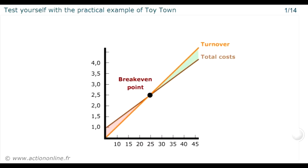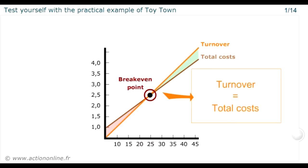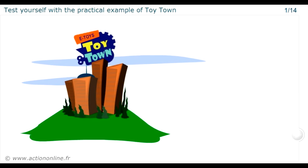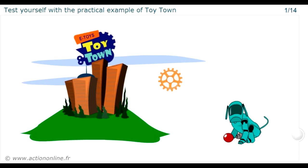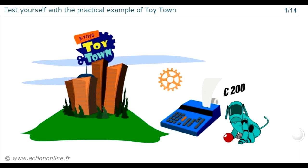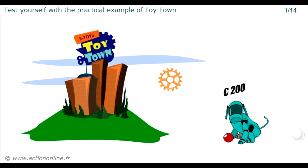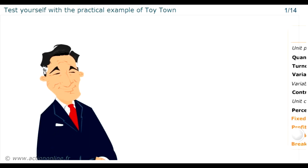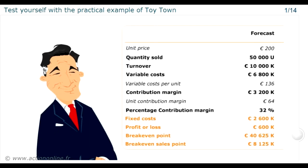In this case, we're going to see how using the break-even point allows us to make decisions. For this, we're going to consider the Toy Town Company. This company manufactures and sells electronic toys with a unit selling price of 200 euros. The director is looking at the forecast income statement for the next year and is unhappy with the result forecast for the end of the year, wanting to take decisions to improve the forecast profits.